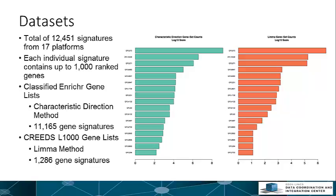Together, these datasets resulted in approximately 12,000 signatures from 17 platforms, with each signature containing up to 1,000 ranked genes. Gene lists from classified Enrichr gene lists were evaluated with the Characteristic Direction method, and gene lists from the CREEDS L1000 database were evaluated using the LIMMA method.